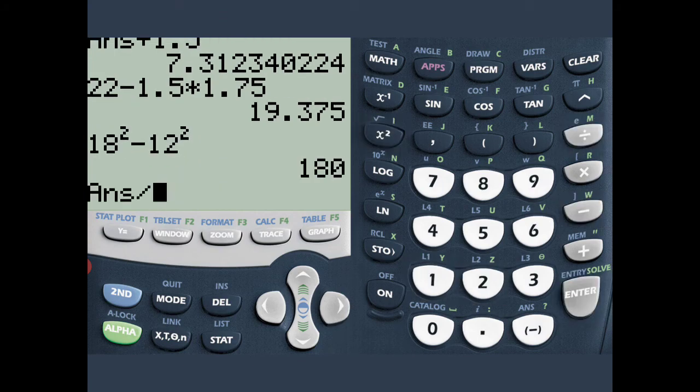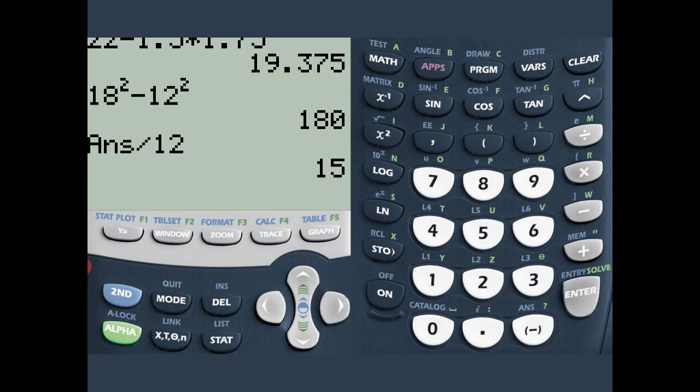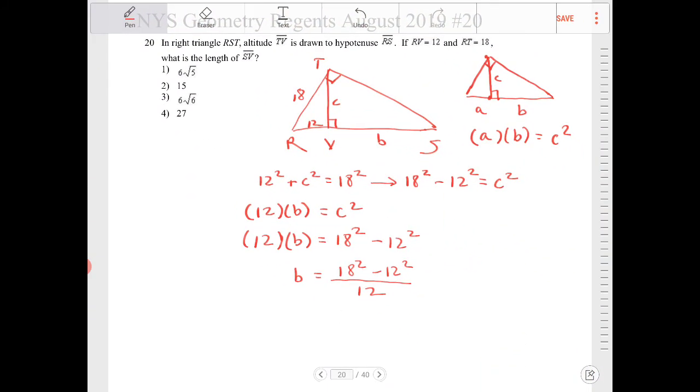That's 180 divided by 12. That's 15. So B is equal to 15.